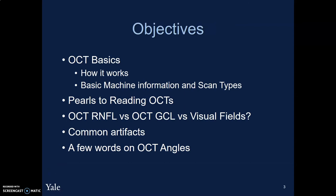Some of the objectives for this talk: first, I'm going to talk about OCT and the basics of OCT, how the machine works, the different machine types available, and the different scan protocols available. Then we'll go on to reading OCTs and how OCT-RNFLs compare to OCT-GCLs compared to visual fields in terms of reliability and predicting vision loss. We'll talk about common pitfalls and artifacts, and at the end, OCT angles.